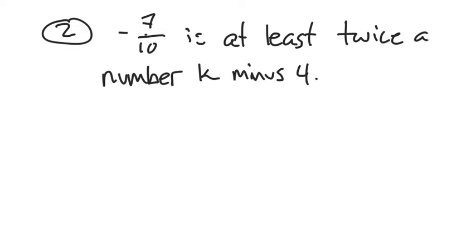All right, let's take a look. Let's see. Negative 7 tenths is at least twice a number K minus 4. So let's take a look here.